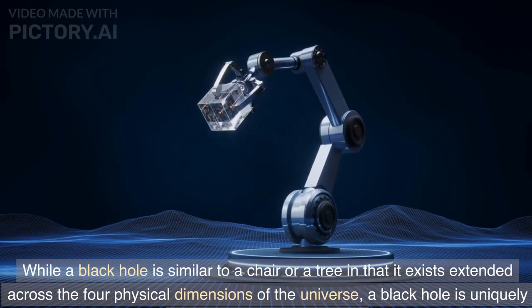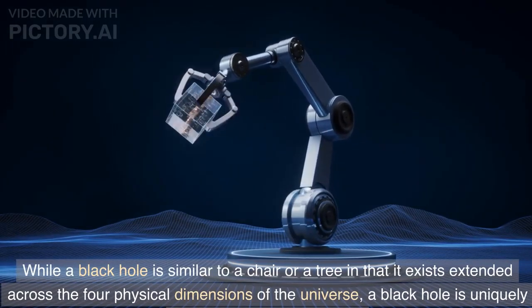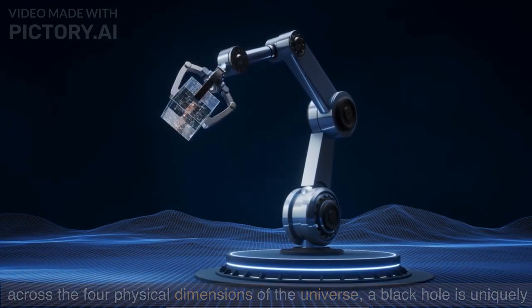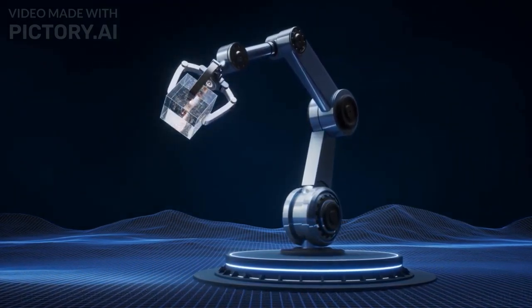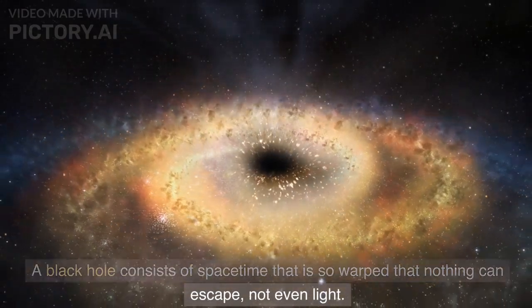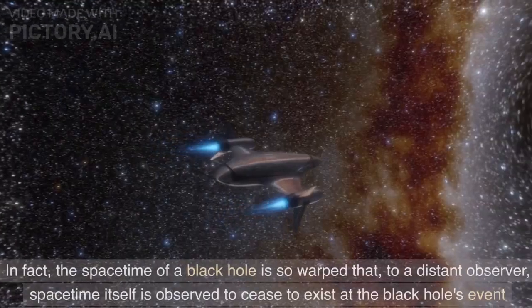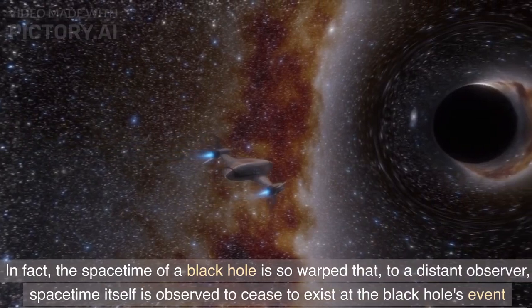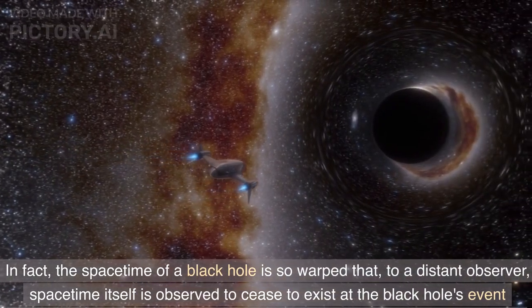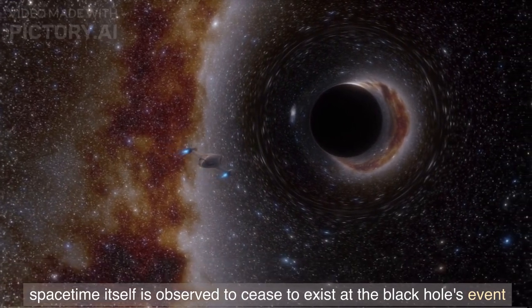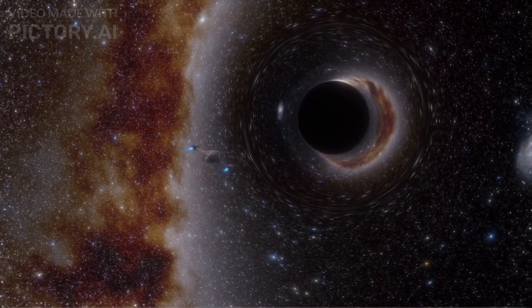While a black hole is similar to a chair or a tree in that it exists extended across the four physical dimensions of the universe, a black hole is uniquely different for another reason. A black hole consists of spacetime that is so warped that nothing can escape, not even light. In fact, the spacetime of a black hole is so warped that, to a distant observer, spacetime itself is observed to cease to exist at the black hole's event horizon, which can roughly be thought of as the surface of the black hole.